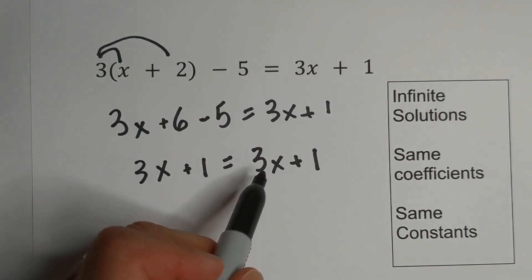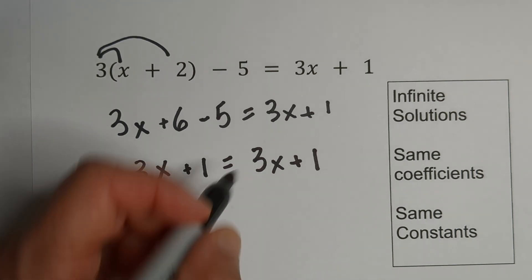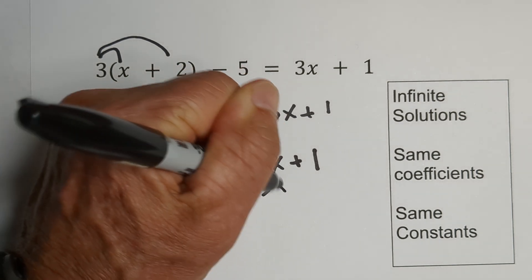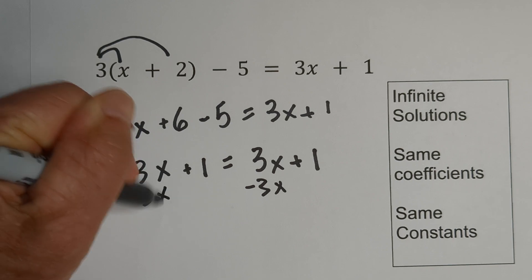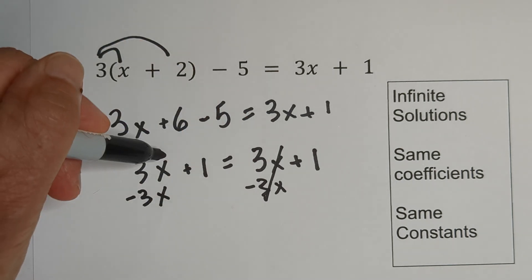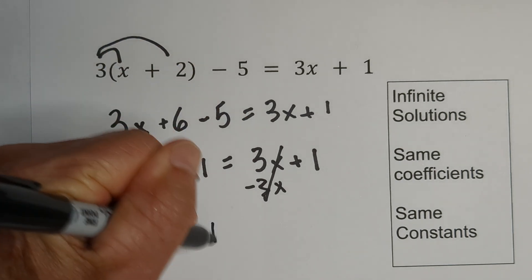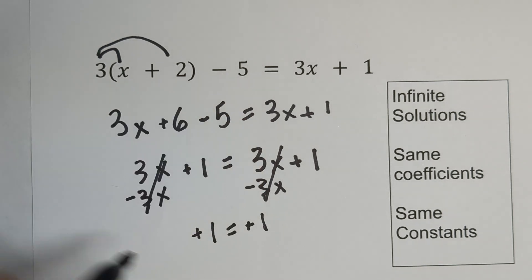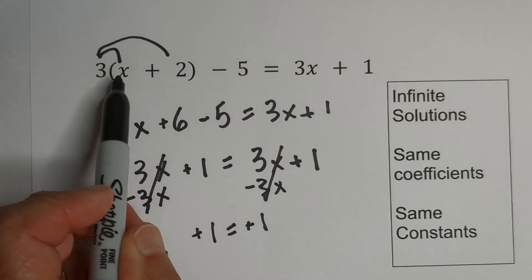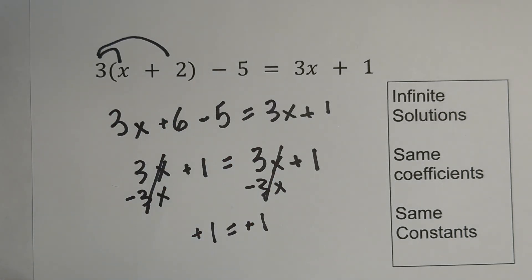Now we need to move the variables to the left. We're going to do an inverse operation, subtract 3x from both sides. Notice they both cancel, but notice that you have one equals one. Whatever number you plug in here, it's going to work out as a solution. So it would be called an infinite number of solutions.